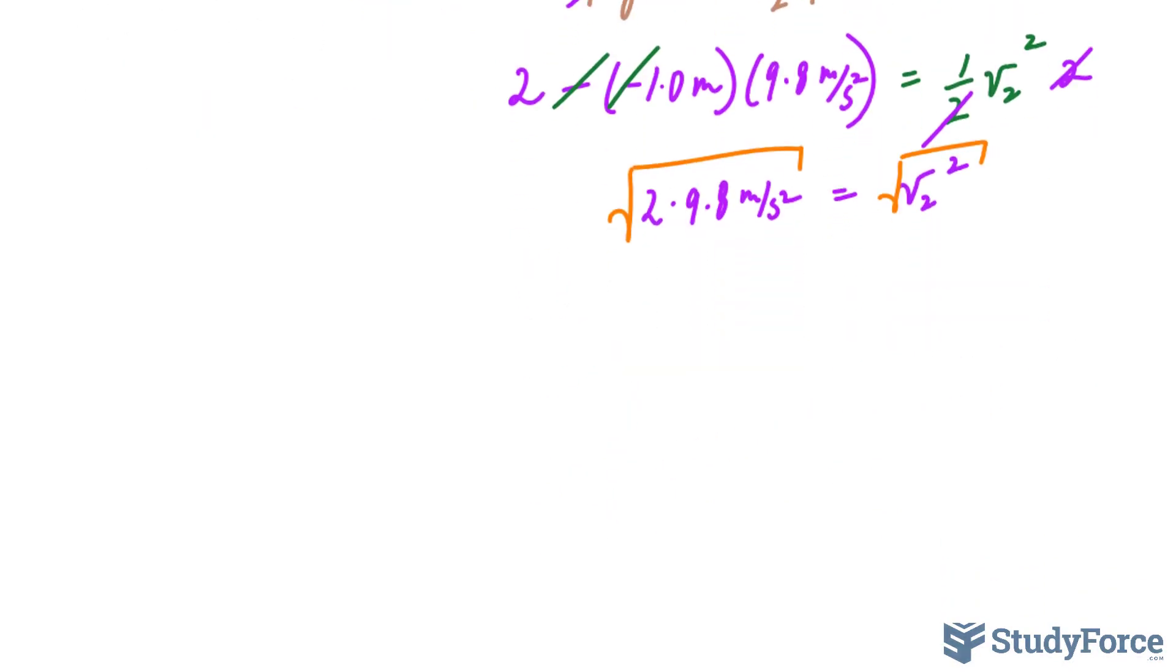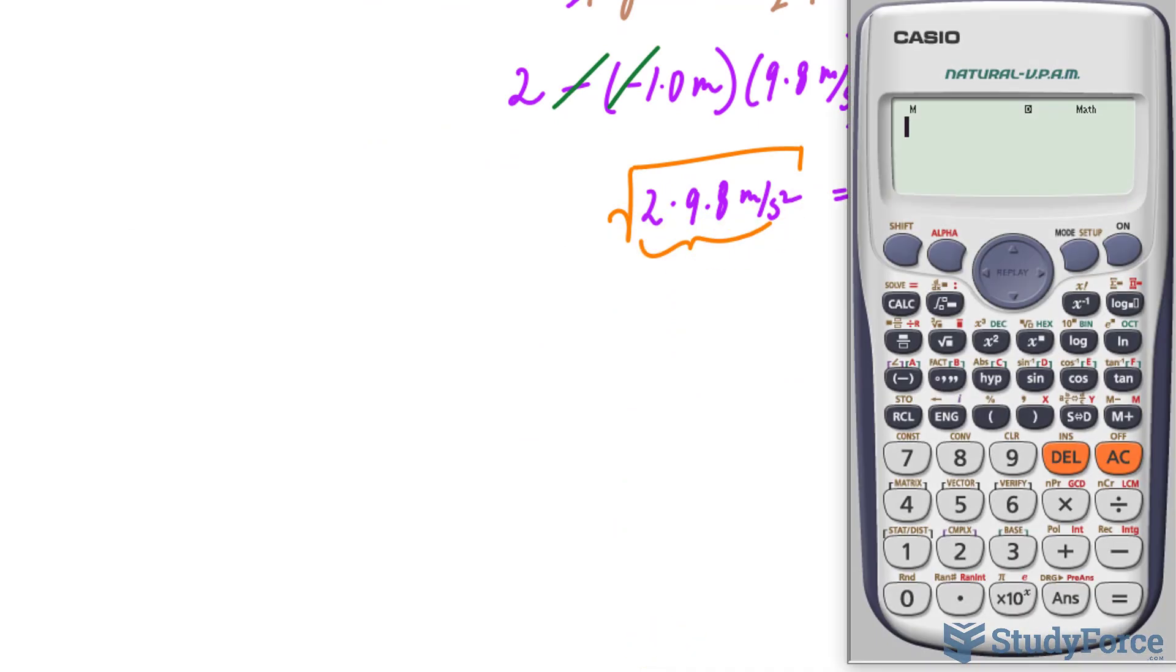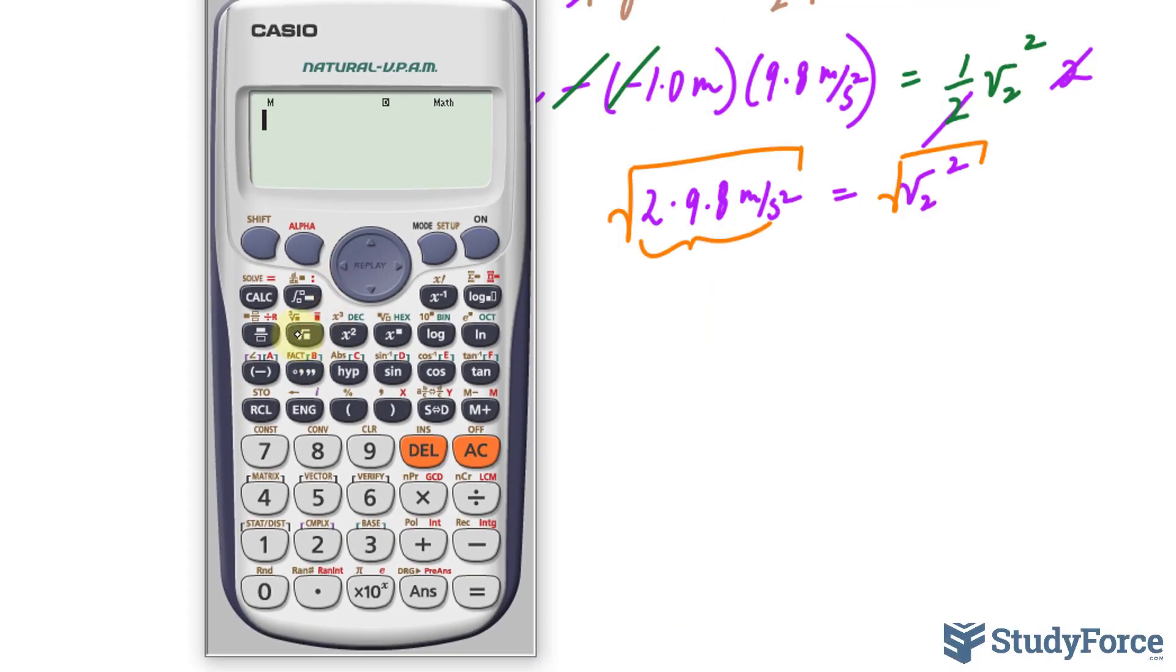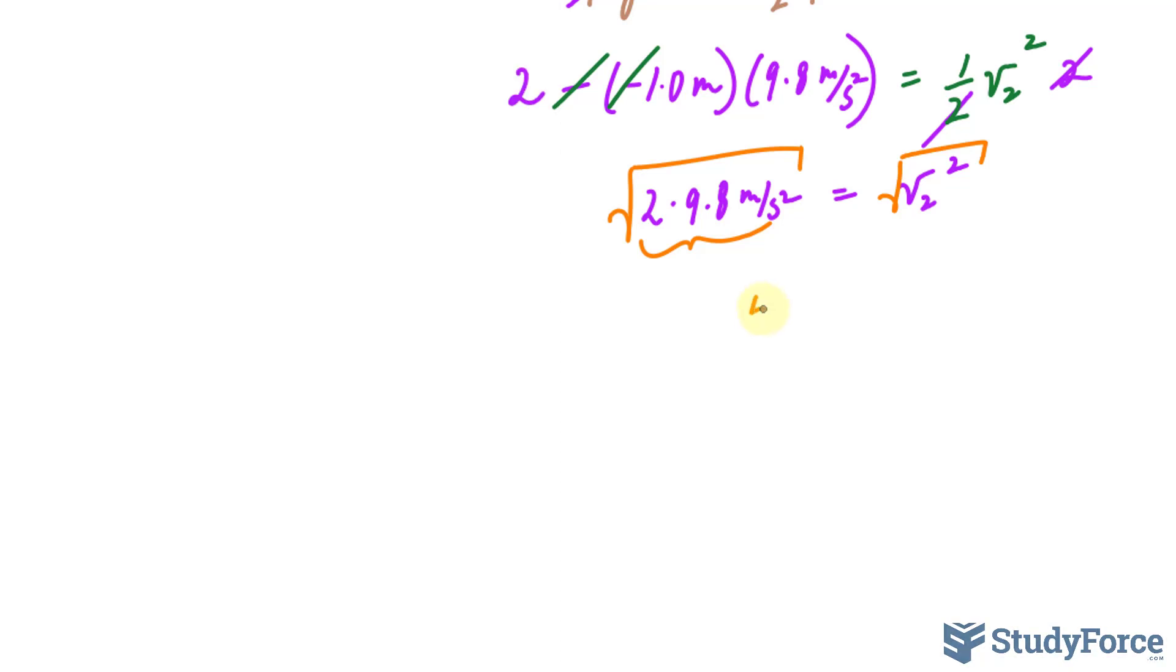All right. By taking the square root of this product, we have our velocity. So the square root of 2 times 9.8 makes roughly 4.4 meters per second.